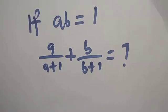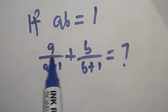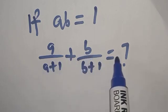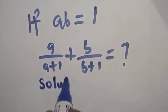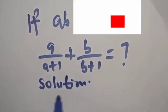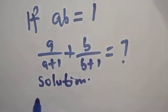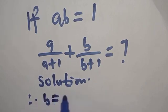Hi everyone, welcome to my class, the Olusta class, where we teach mathematics and statistics. Now the question says if ab is equal to 1, then a over a plus 1 plus b over b plus 1 is equal to what? Now solution, if ab is equal to 1, this can be written therefore b is equal to 1 over a.